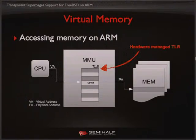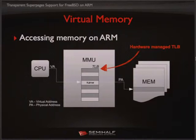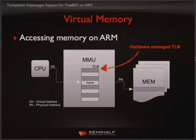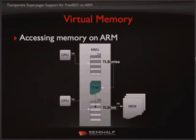Now let's look at how we access memory on ARM processors. When the CPU invokes a virtual address, the MMU needs to find the corresponding entry in the translation look-aside buffer. If there is a proper translation in the TLB — a TLB hit — access is granted almost immediately. According to documentation on modern ARM, the TLB hit penalty is about 0.5 to 1 CPU cycle, so it's almost free.